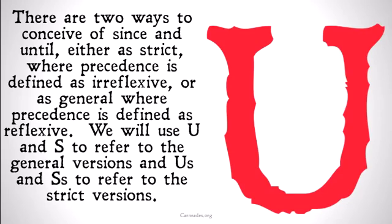There are two ways to conceive of since and until: either as strict, where precedence is irreflexive, or as general, where precedence is defined as reflexive. Check out my video on whether precedence is reflexive, or any of my videos on reflexivity and properties of relations if those ideas confuse you. We're going to use U and S to refer to the general versions where precedence is reflexive, and US and SS to refer to the strict versions where precedence is irreflexive.